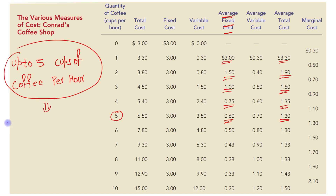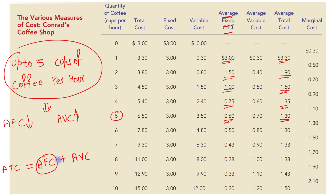AFC is continuously declining, as we know. But if we look at AVC, AVC is increasing. ATC equals AFC plus AVC — one variable is declining and the other is increasing. But if we look at the final result, ATC is declining up to 5 cups of coffee per hour. We can say that up to 5 cups of coffee per hour, the decrease in AFC dominates the increase in AVC, and that is the reason ATC is declining.